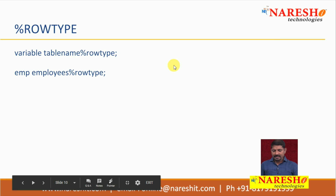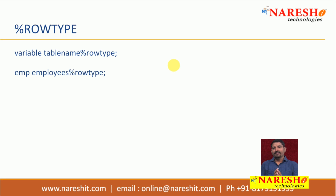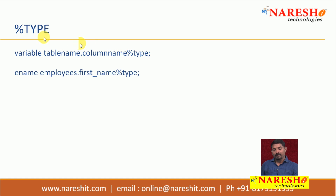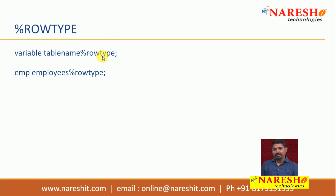The next type is %ROWTYPE. %ROWTYPE stores the whole record as a collection of fields into the variable. The syntax is: variable_name table_name%ROWTYPE. Notice the difference — for %TYPE it is table_name.column_name%TYPE, whereas for %ROWTYPE it is just table_name%ROWTYPE. For example, 'emp' is the variable, declared as employees%ROWTYPE — so all values from a particular record of the employees table will be stored into the variable 'emp'. When accessing the values, you use variable_name.column_name.